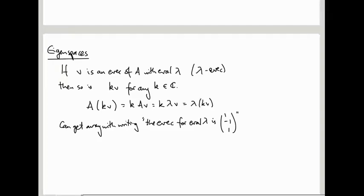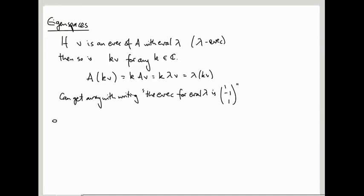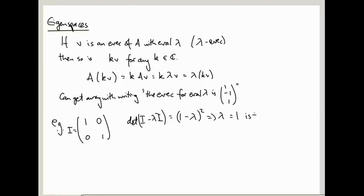Okay, so you can't always get away with this. So let me just give you an example. Let's suppose we have the matrix 1, 1, as in 1, 0, 0, 1, the identity matrix. What are the eigenvalues of this? Well, identity minus lambda times the identity. Its determinant is just 1 minus lambda to the n, in this case 1 minus lambda squared. So lambda equals 1 is the only eigenvalue.